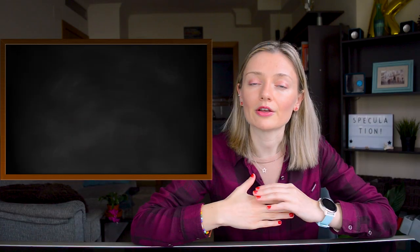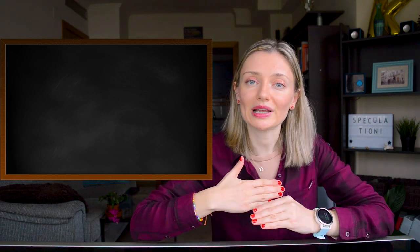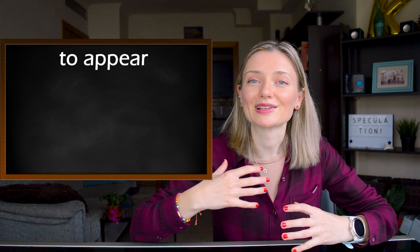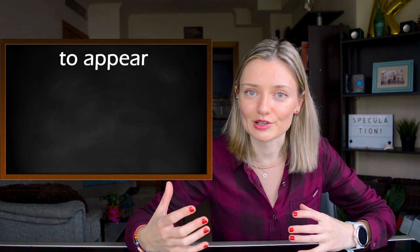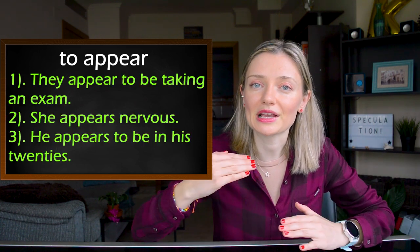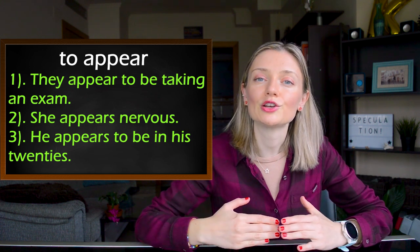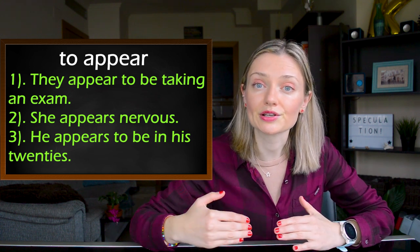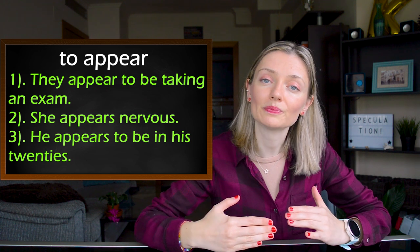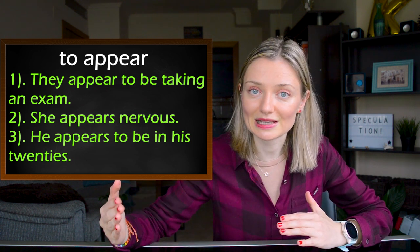Number five: another verb we could use to speculate is 'to appear.' For example: 'They appear to be taking an exam.' 'She appears nervous.' And: 'He appears to be in his 20s.'